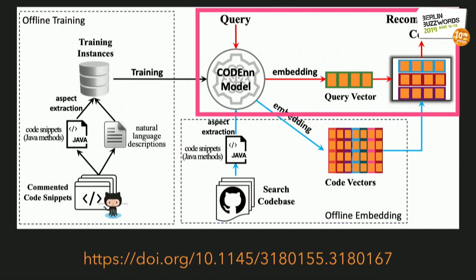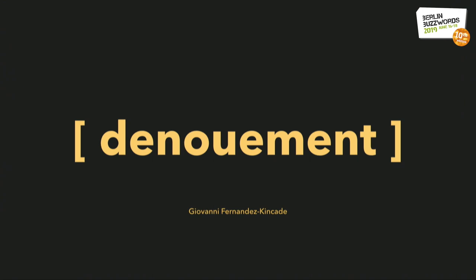And lastly, when DeepCS is ready for search, a user enters their natural language query. DeepCS transforms the query into a vector, performs a search to find the k-nearest code vectors to that query vector, and returns the corresponding code snippets in decreasing order of proximity.